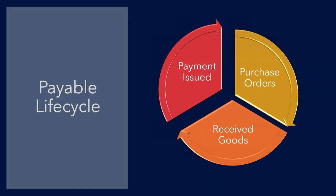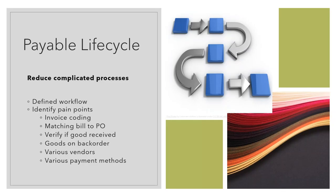Moving ahead and talking about the payment lifecycle — this is where you start seeing all the various methods and vendors. If the other two areas weren't complicated enough, this is where there's a lot of room for error. This last phase of the accounts payable process relies heavily on the purchase order and receivables phases, which is why it's imperative to have processes in place for good communication between departments. All departments need written, defined workflow orders — the people and the tasks must be in alignment.